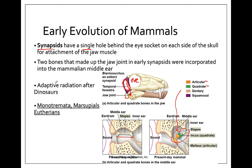Mammals had a huge adaptive radiation after the extinction of the dinosaurs. During the time of the dinosaurs, mammals were mostly small and kind of looked like little rodents. But after that, there were a lot of niches open to mammals, and so mammals spread throughout the world and throughout the different habitats on the world.